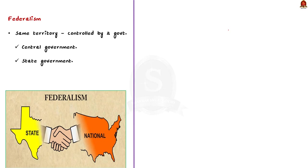In simple words, federalism is a system of government in which the same territory is controlled by two levels of government — one at the central level and the other at the state level.